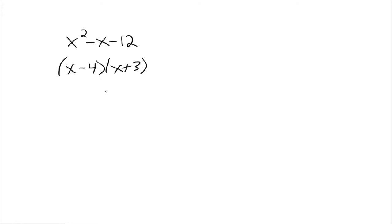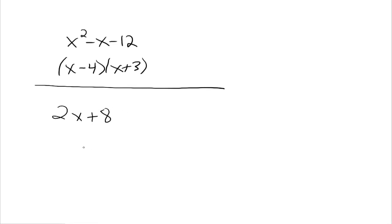It's a product, and that's the idea to keep in mind about factoring — we're always writing our expression as a product. Even when we had something as simple as 2X plus 8, we rewrote that as 2 times X plus 4 by factoring out the greatest common factor. So 2 is one factor, X plus 4 is another factor, and 2X plus 8 is written in factored form.